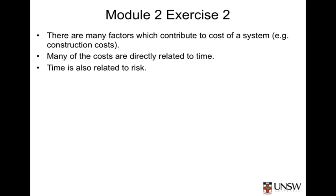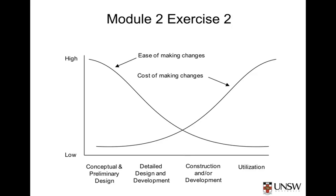Many costs to the system are related in one way or another to time. If construction takes longer than expected, the owner may be required to pay additional fees and penalties to contractors. Even construction materials may cost more as a result of missing a sale or having to pay additional storage and delivery cancellation fees. Time is also related to risk — if your construction schedule is high risk, it is more likely you will incur greater costs. The difficulty and cost of making changes increases later in the lifecycle, so systems engineering aims to spend time in the conceptual and preliminary design phases to minimise the risk of something being incorrect and requiring costly change later.